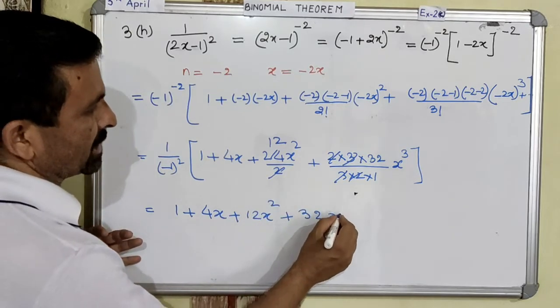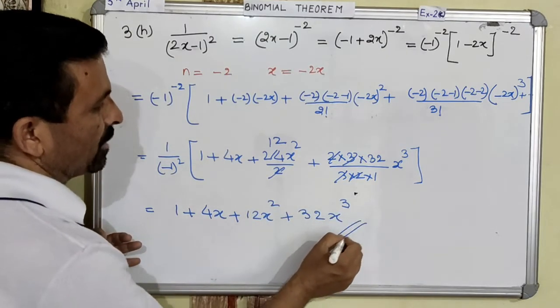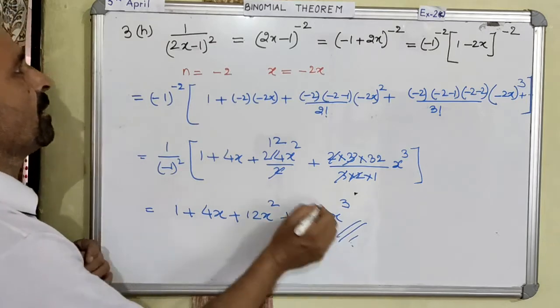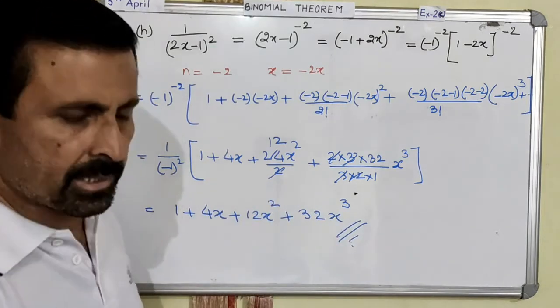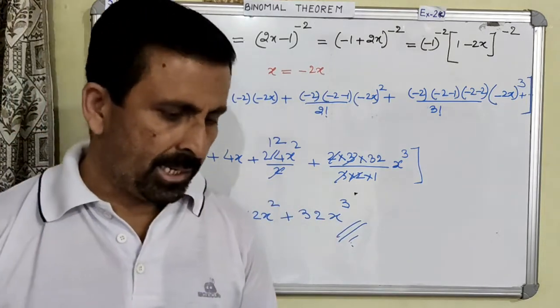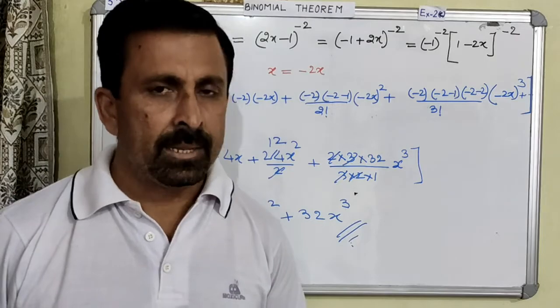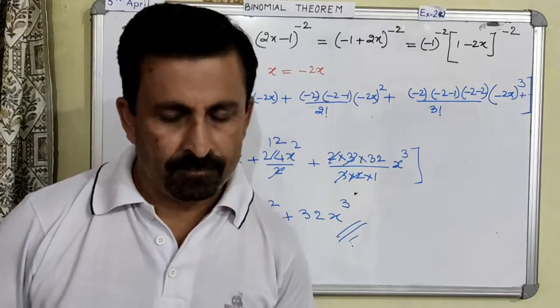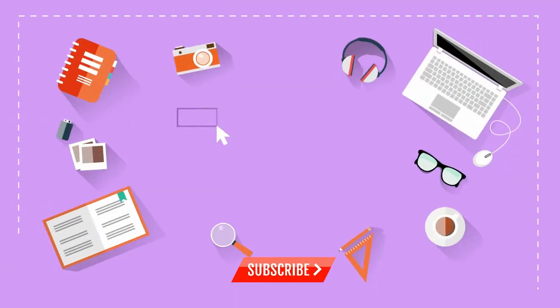So the final answer is 1 plus 4x plus 12x squared plus 32x cubed. This is your final answer. Thank you, have a nice day, take care, stay at home.